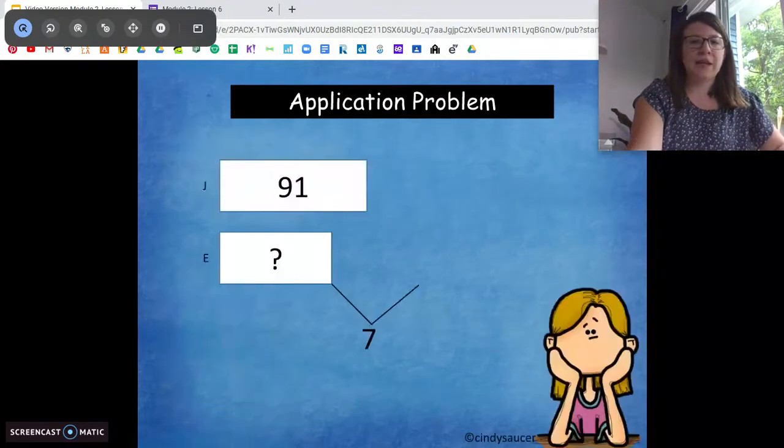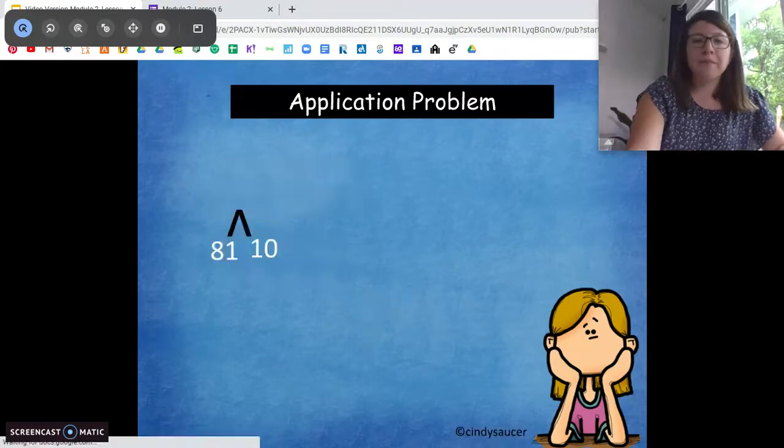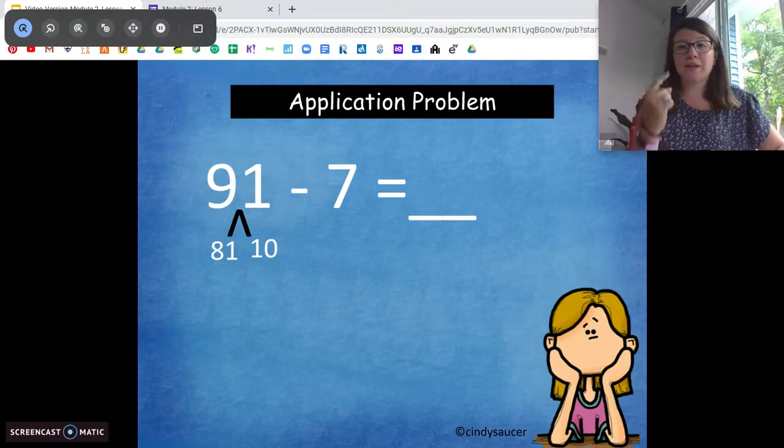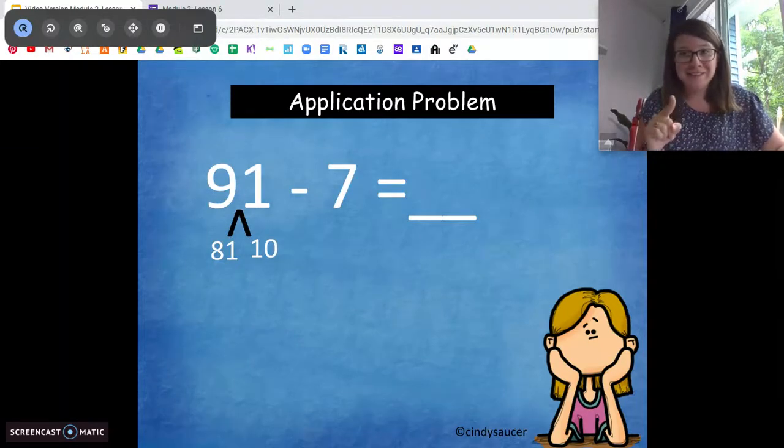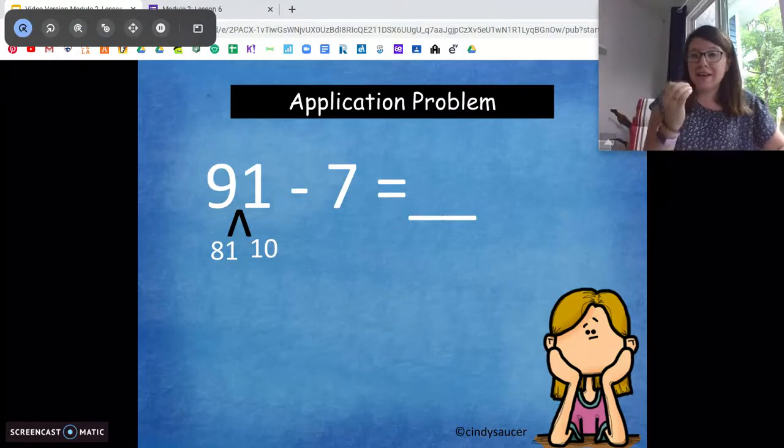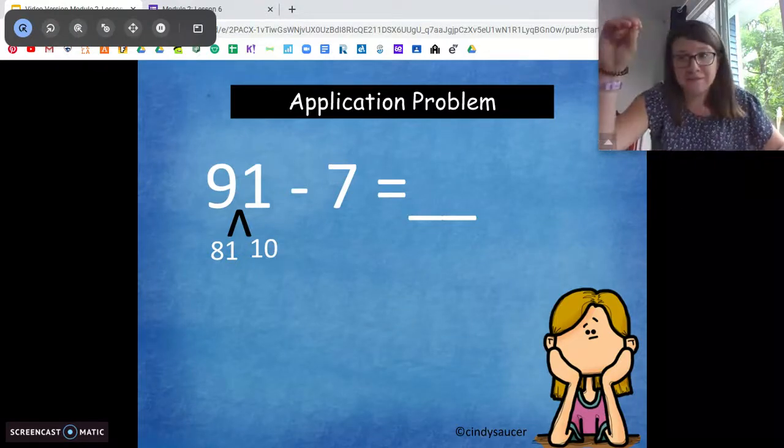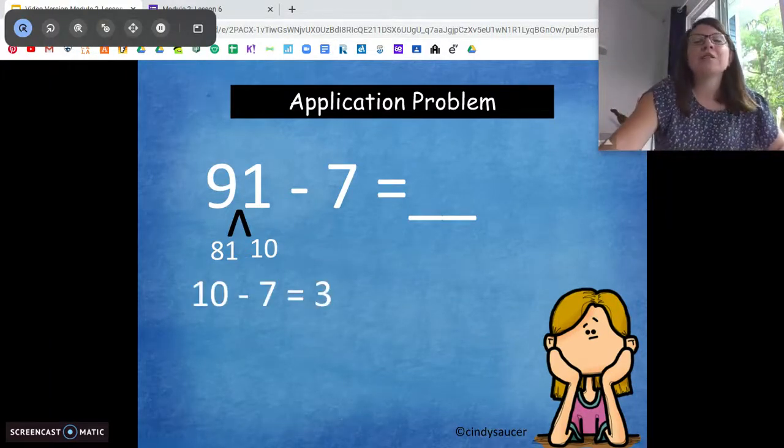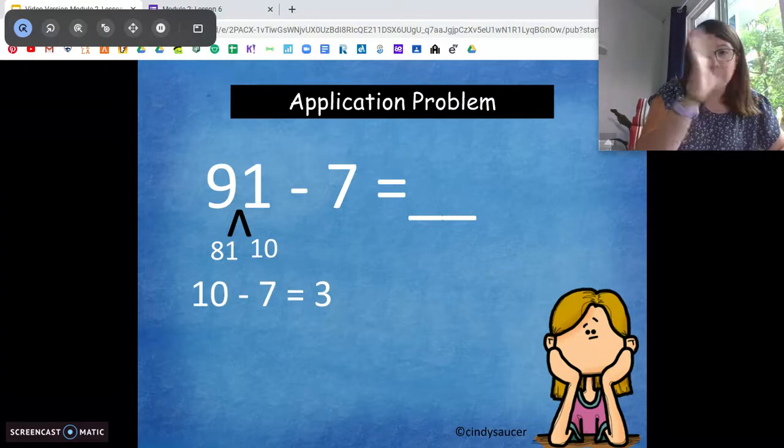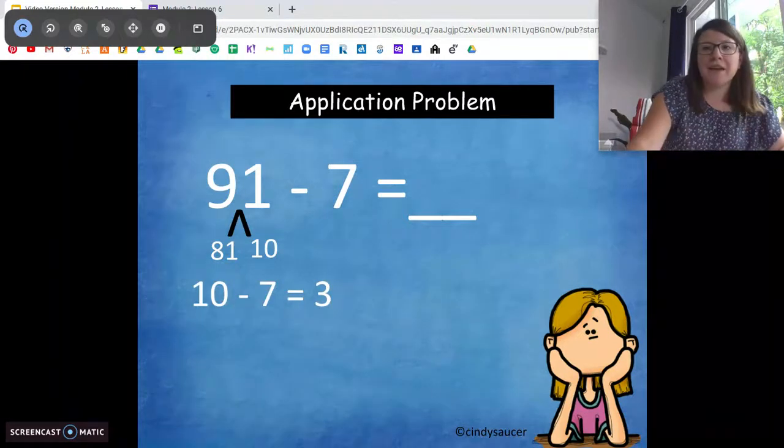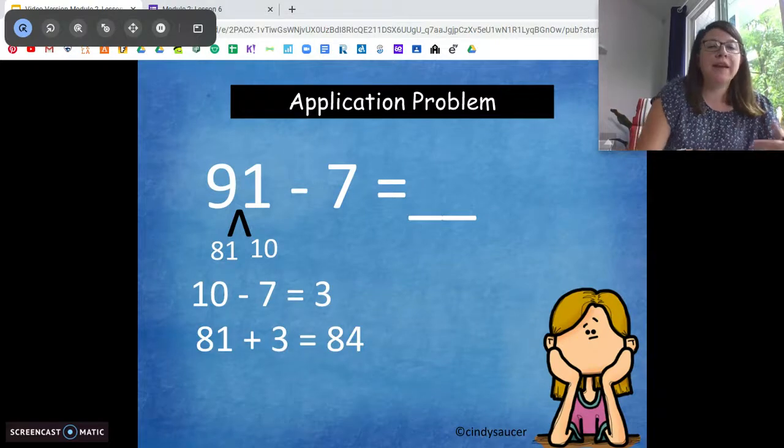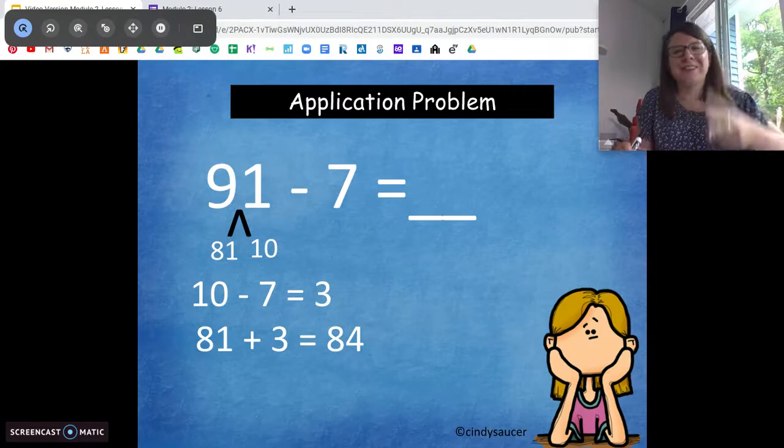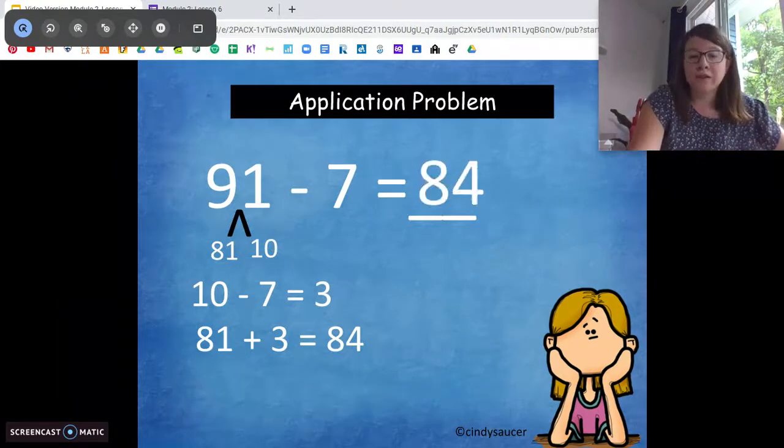Ready? Okay, let's go through it together. So they set up their tape diagram just like we did. 91 minus 7. We're going to take the 10 out of 91 because we know how to subtract from 10. Super easy for us. So we're going to take the 10 out of 91. We're going to do 10 minus 7. 10 minus 7 is, you know that, 3. Awesome. So then we're going to take that extra part of the 91 that we broke down, which is what? 81. Good. And we're going to add it to our 3. 81 plus 3. 81, 82, 83, 84. So our answer is 84. Thumbs up if you got that.